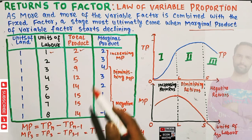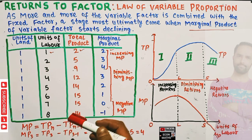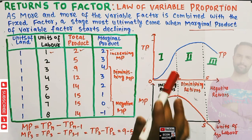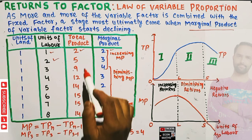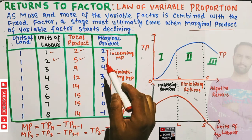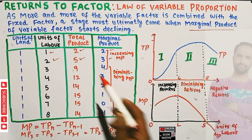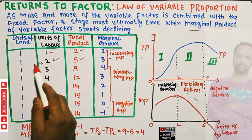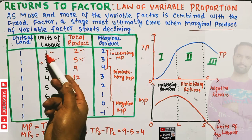When one unit of labor was employed, our total product was two, meaning our marginal product is also two. Marginal product is the addition to the total product when one unit of variable factor is employed. When we employ two units of labor, our total product increases to five, and our marginal product increases to three. The marginal product of the second labor is simply the total product at the second labor minus the total product at the first labor.